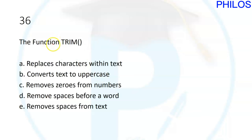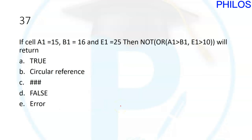Question thirty-six: what does the TRIM function do? When you use TRIM it removes extra spaces from text. The correct answer to question thirty-six is E.